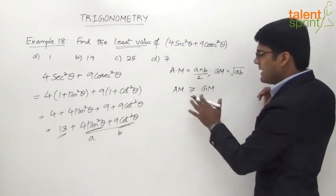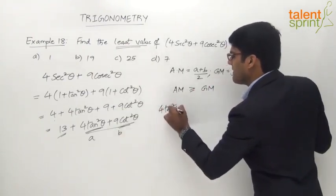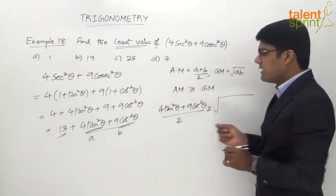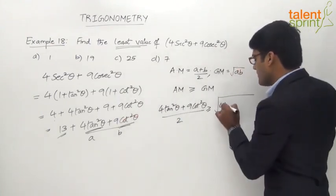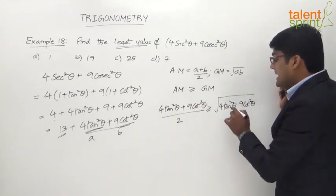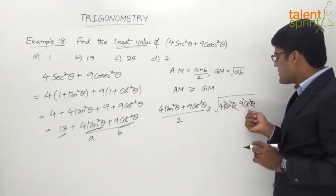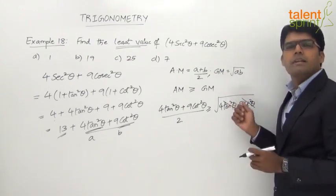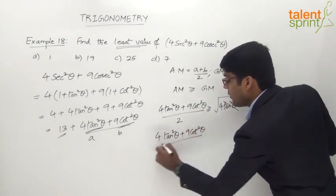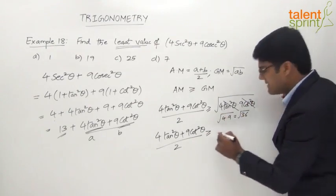Applying AM ≥ GM to the terms 4tan²θ and 9cot²θ: (4tan²θ + 9cot²θ)/2 ≥ √(4tan²θ · 9cot²θ). Since tan²θ and cot²θ are reciprocals, tan²θ · cot²θ = 1, so they cancel. We are left with (4tan²θ + 9cot²θ)/2 ≥ √(4 × 9) = √36 = 6.